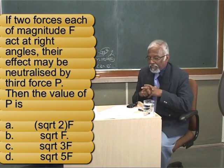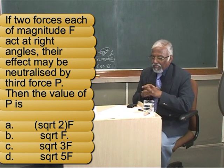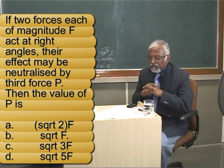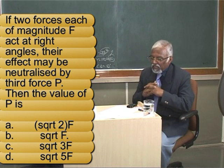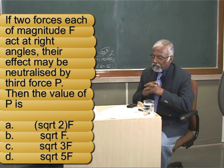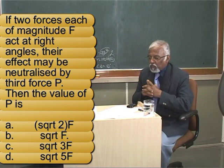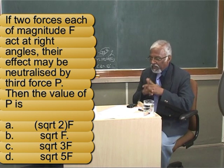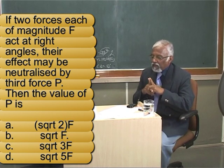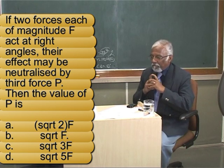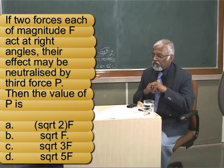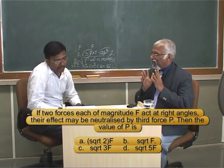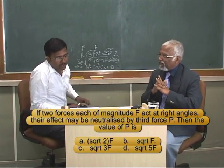If two forces, each of magnitude F, act at right angles, their effect may be neutralized by a third force P. The value of P is: the first option square root 2F, square root of F, square root 3F, or square root of 5F. The time has already started. You have spent 30 seconds already.